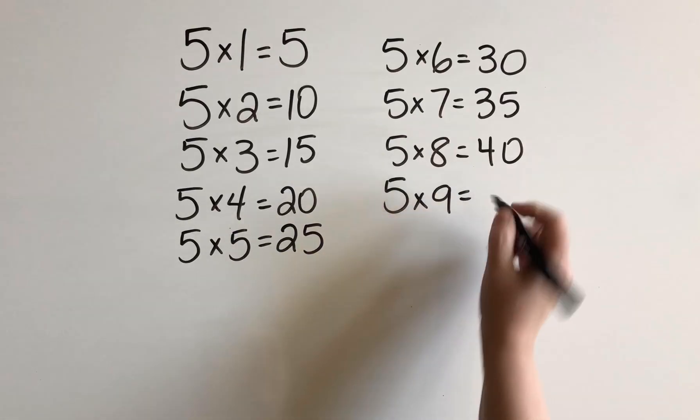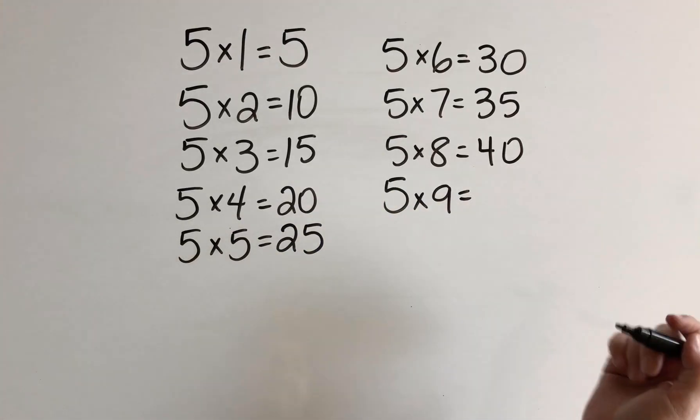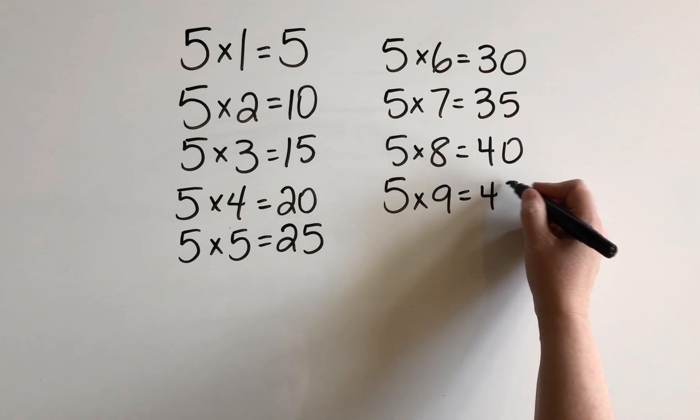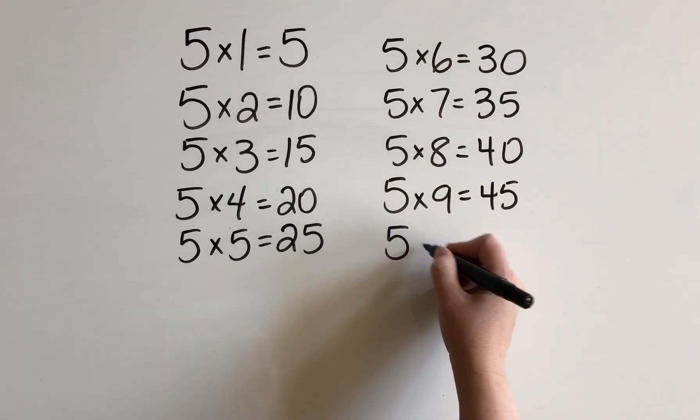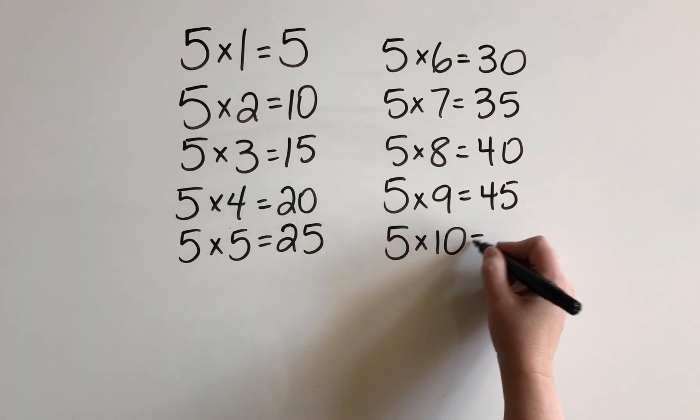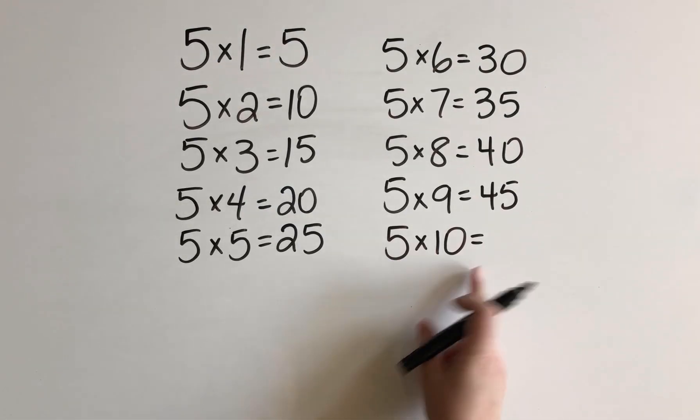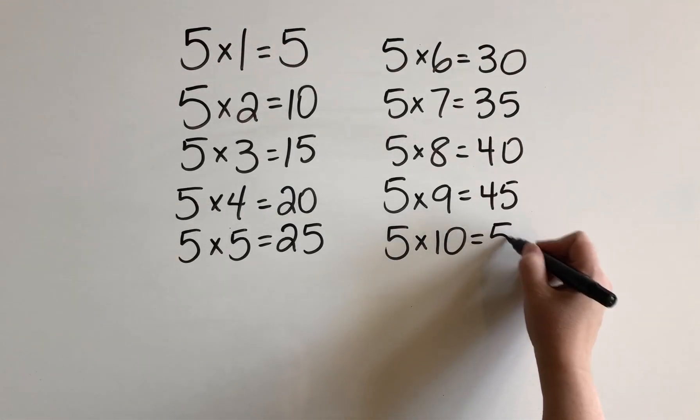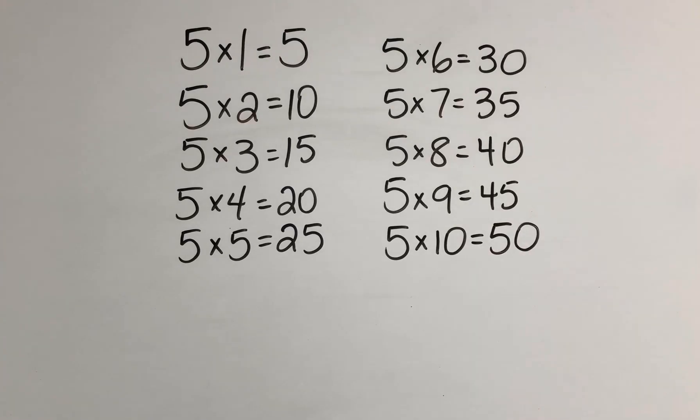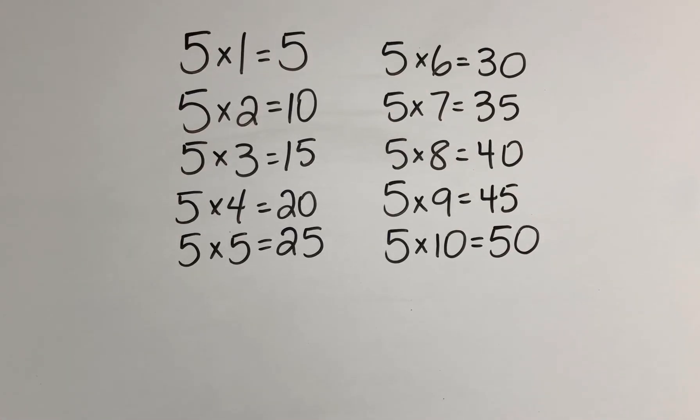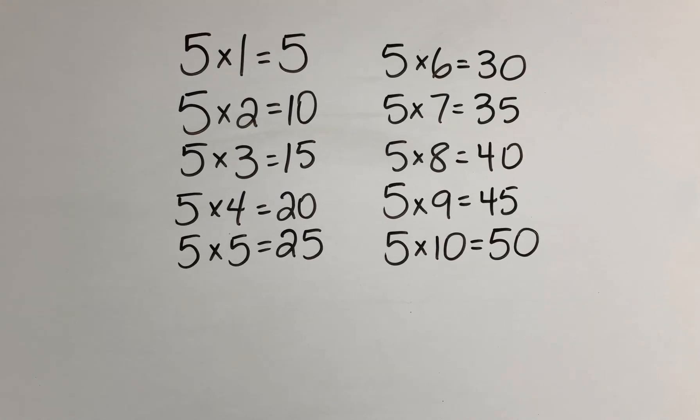For 5 times 9, we'll start with 10 times 9 to give us 90. And then half of that gives us 45. And let's end with 5 times 10. So 10 times 10 would be 100, or 5 times 10 would give us 50. Now remember, this is just one strategy for multiplying by 5. There are other ways that you could figure this out too. But this is just one more little tool to put into your multiplication toolkit.